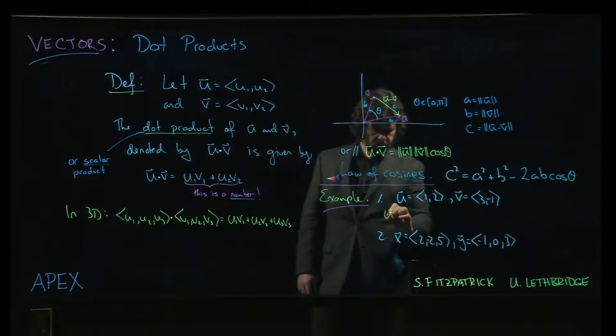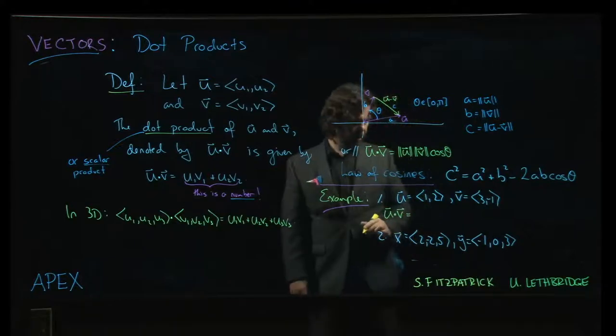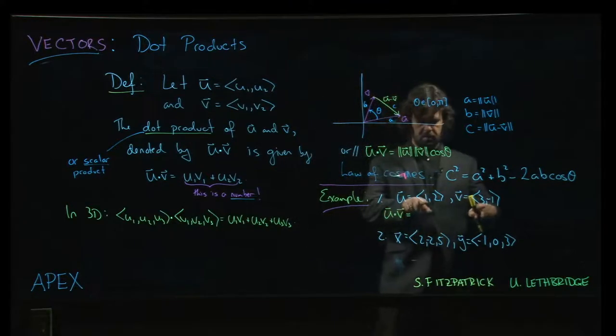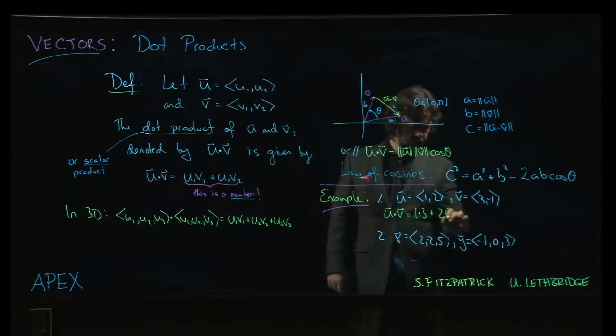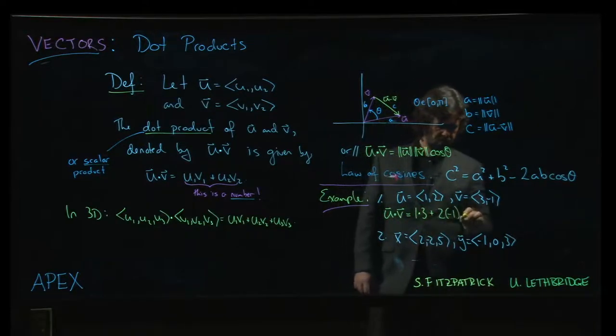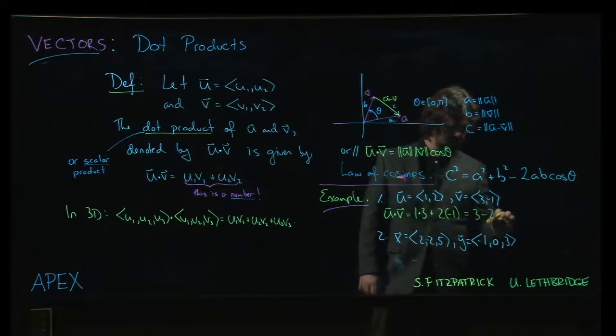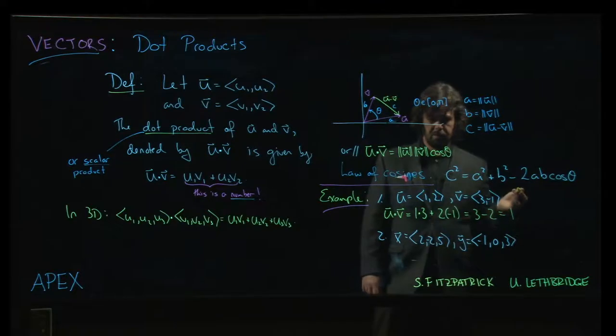And it's really not too bad. We multiply the first components, so it's one times three, and then the second, two times minus one. So, one times three is three, two times minus one is minus two, and we get a dot product of one.